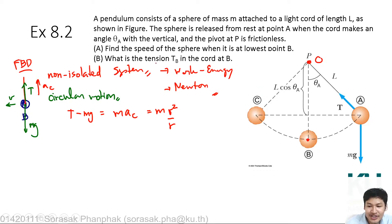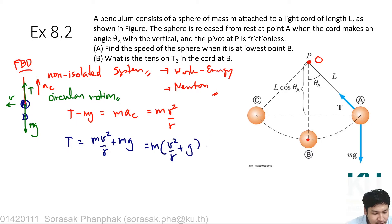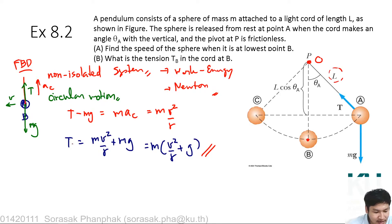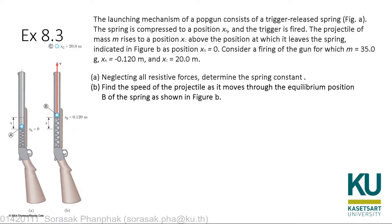With this relation you can determine the tension. At position B, rearranging gives: tension = mv²/r + mg, which can be factored as m(v²/r + g). Here r is the string length L, so the tension at position B is T_B = m(v²/L + g). This is the tension in the cord at position B.